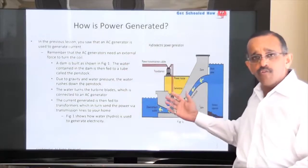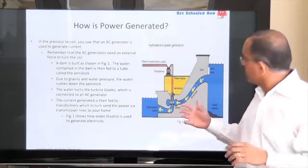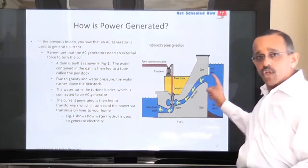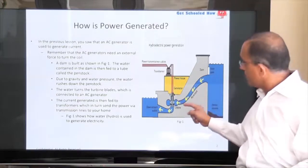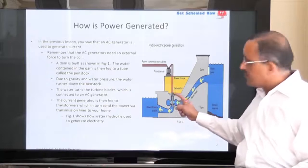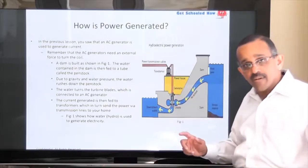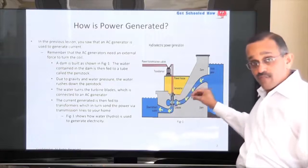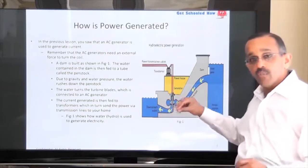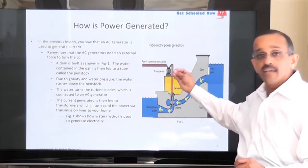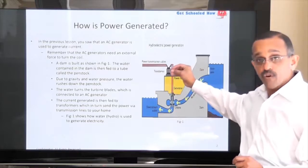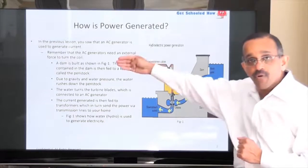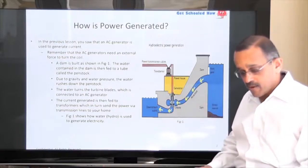In this particular example we have hydropower — power being generated through the damming of water. We have a dam here, a water buildup, and something called a penstock. When the penstock valves are open, water flows through and turns a turbine. There's a generator sitting over here — this is the AC generator that you learned about in the previous lesson. The AC generator is turned by the external force of water flowing through the penstock, which in turn is stepped up by a step-up transformer, as you learned in the transmission efficiency lesson. The power is then transmitted through transmission towers and power cables to your home.